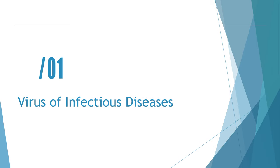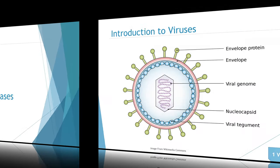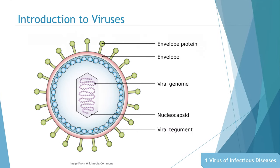Part 1: Virus of Infectious Diseases. A virus is an infectious agent of small size and simple composition that can multiply only in living cells of animals, plants, or bacteria.